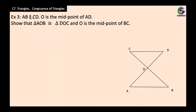Let us see through some examples. AB is parallel to CD, so we can apply alternate interior angles, corresponding angles, or same-side interior angles. The next condition is that O is the midpoint of AD, which means AO is equal to OD. Since the two lines are parallel, we can follow the Z-shape to find equal angles.